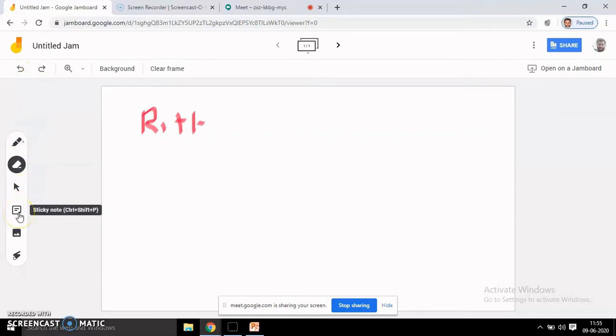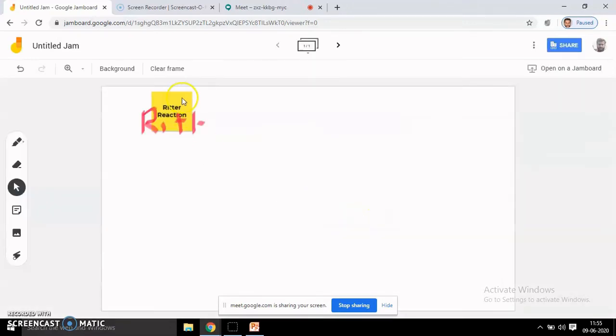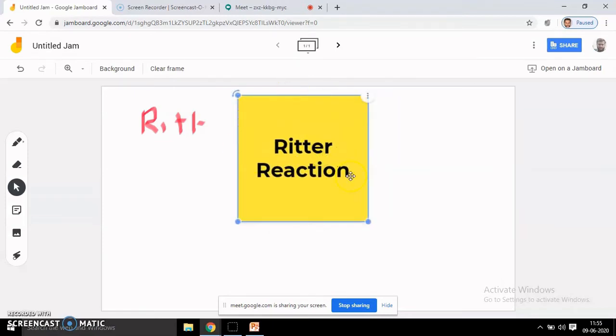Then you have a sticky note here. Suppose I want to type something here, Ritter reaction, save it. It will come here. Sticky note you can enlarge it, so if you want to take some topic you can write it like this.